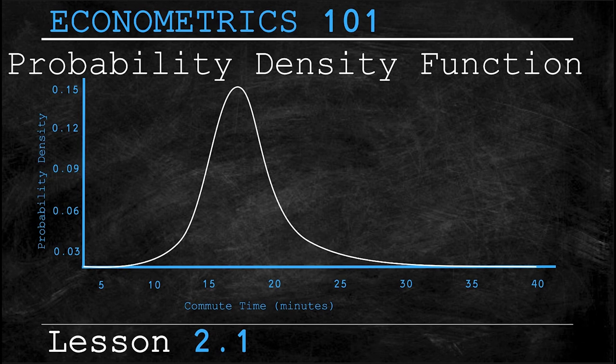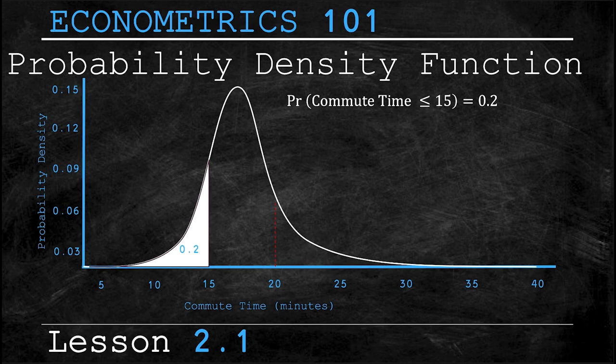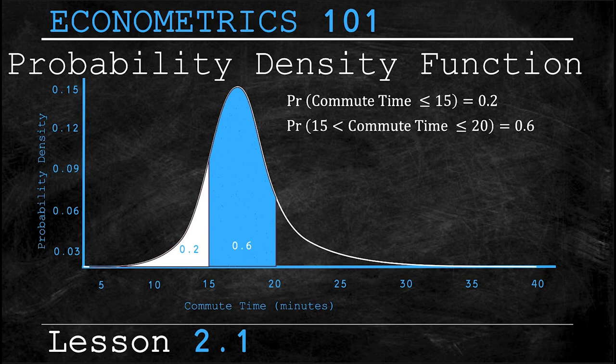Notice that this shows the exact same information as our CDF except it's displayed a little differently. Here we can still see that the probability of your commute being 15 minutes or less is still 0.2 or 20 percent. The probability that your commute falls between 15 and 20 minutes is 0.6 or 60 percent and then the probability that your commute is longer than 20 minutes is also 0.2 or 20 percent.